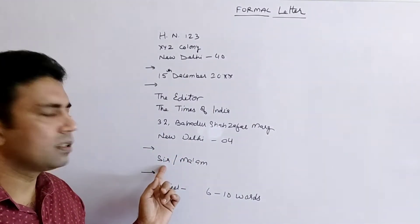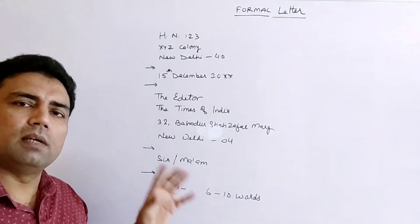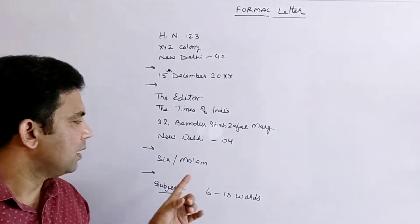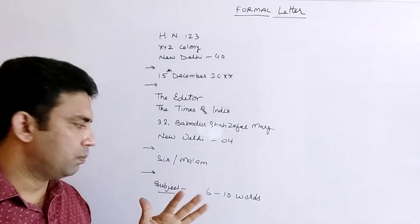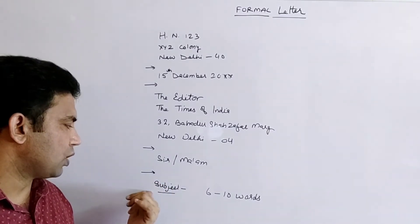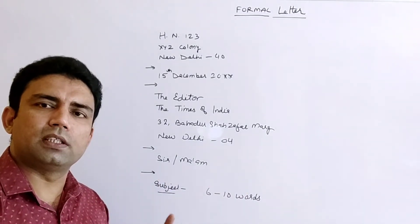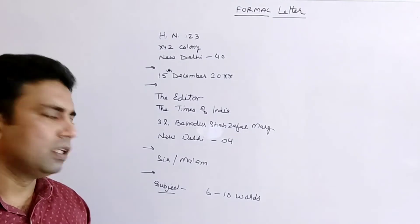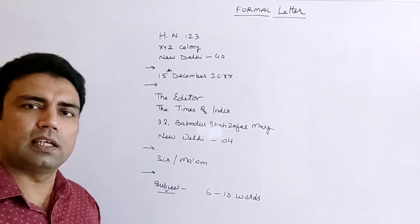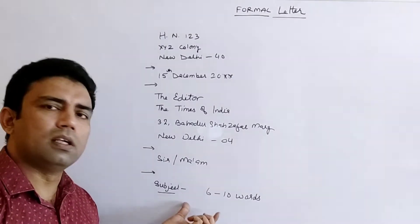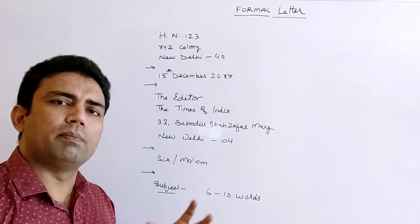Leave a line, then write the salutation: 'Sir/Ma'am.' This is the most formal way — rather than writing 'Respected Sir' or 'Respected Ma'am,' it is better to write 'Sir/Ma'am' because we don't know whether the person is male or female. After that, leave a line and write the subject — 6 to 10 words. Use the topic given in the question but try to modify it in an attractive way.